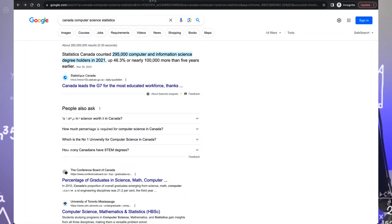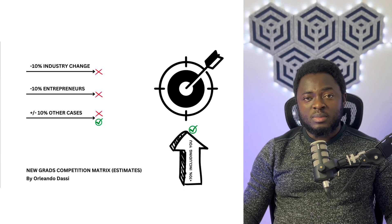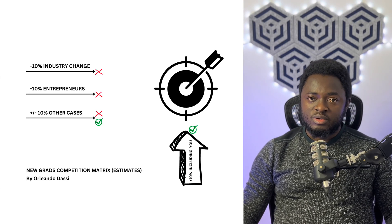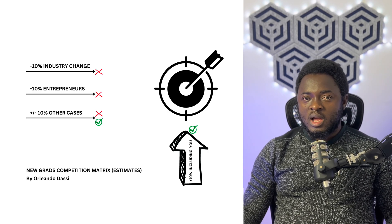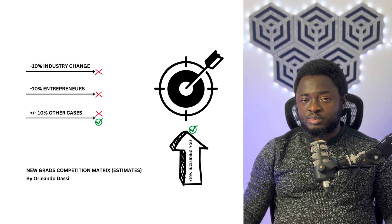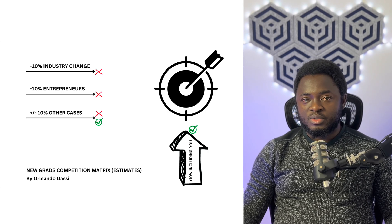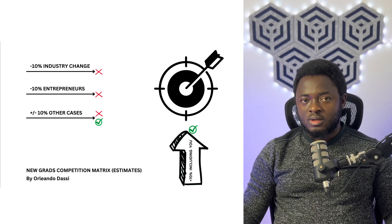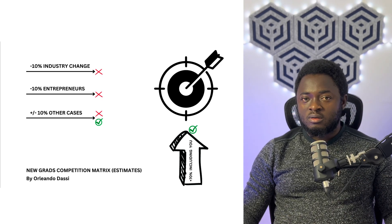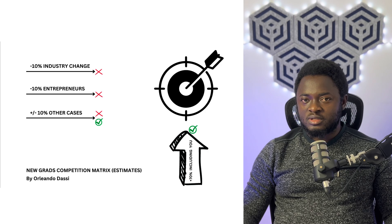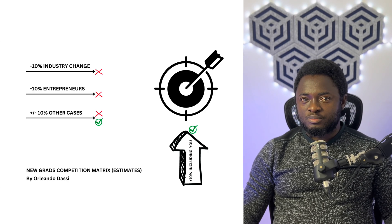Each year, almost 300,000 students graduate. Maybe 10% of them will be disappointed after school and resign or change industry. Another 10% will become full-time entrepreneurs creating startups or companies. With another 10% margin of error, you still have 70% of your graduating year to compete with in order to land a job.